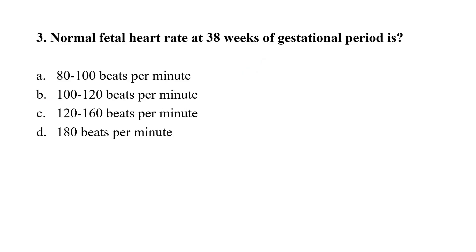Question number 3: Normal fetal heart rate at 30 weeks of gestation period is — option A: 80 to 100 beats per minute; option B: 100 to 120 beats per minute; option C: 120 to 160 beats per minute; option D: 180 beats per minute. The correct option is C, that is 120 to 160 beats per minute.